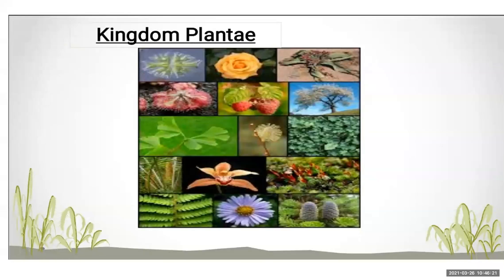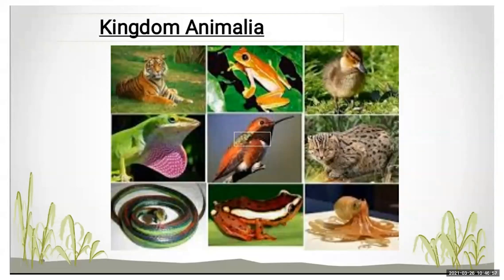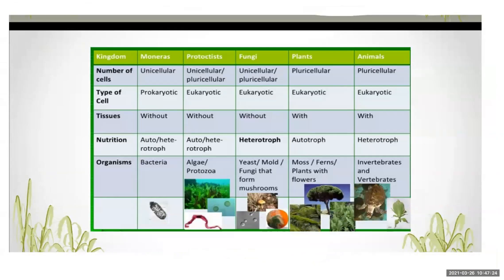Kingdom Plantae is the most vast because in our environment we see many different types of plants. In Kingdom Plantae, they are called autotrophs because there is a presence of chlorophyll, so these plants are able to perform the process of photosynthesis and make their own food. Kingdom Animalia includes all different animals; they are not able to make their own food and are dependent on plants and various animals.